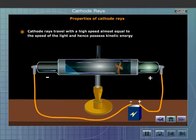Cathode rays travel with a high speed almost equal to the speed of light and hence possess kinetic energy. When cathode rays are made to fall on a paddle wheel, the wheel starts rotating showing that the rays possess kinetic energy.